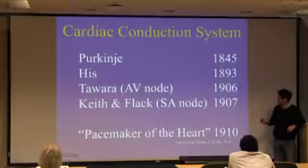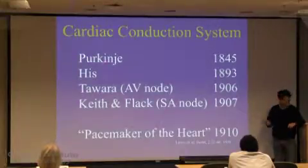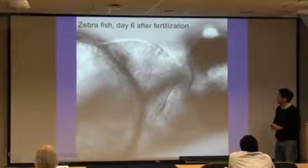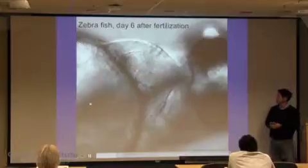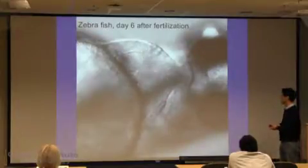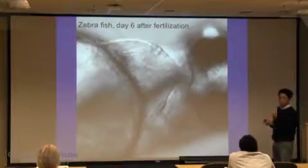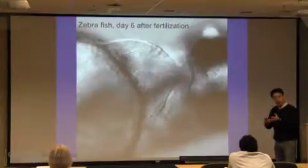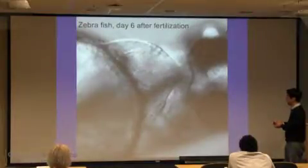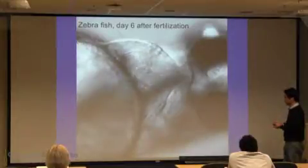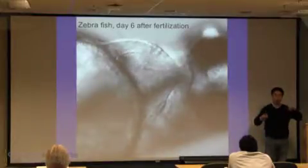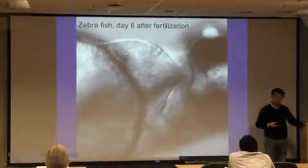This cardiac conduction system, going from the SA node to the AV node, through His bundles and the Purkinje system, is universal for all mammalian hearts and even in fish hearts. This is a zebrafish six days after fertilization. Fish have a single atrium and one ventricle. They do have a sinoatrial node ring at the top of the atrium and an AV ring in between. That cardiac conduction system is a general theme in keeping the heart beating in mammals and amphibians.